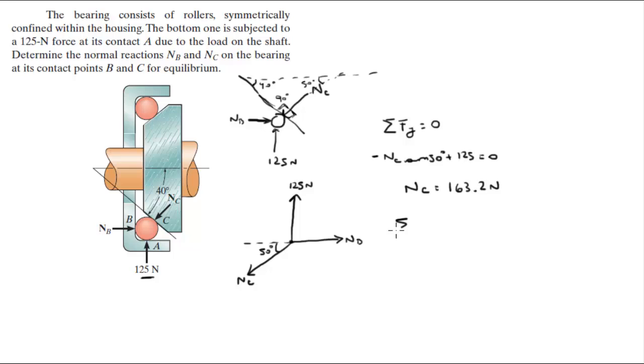Now you know that the sum of the forces in the X is also equal to 0. Now you know that the X component of this Nc is negative Nc cosine of 50 plus Nb, and this 125 N force has no X component. So this is 0. But you know Nc already to be 163.2 cosine of 50 plus Nb is equal to 0. So when you solve for Nb, you get that Nb is equal to 104.9 N.